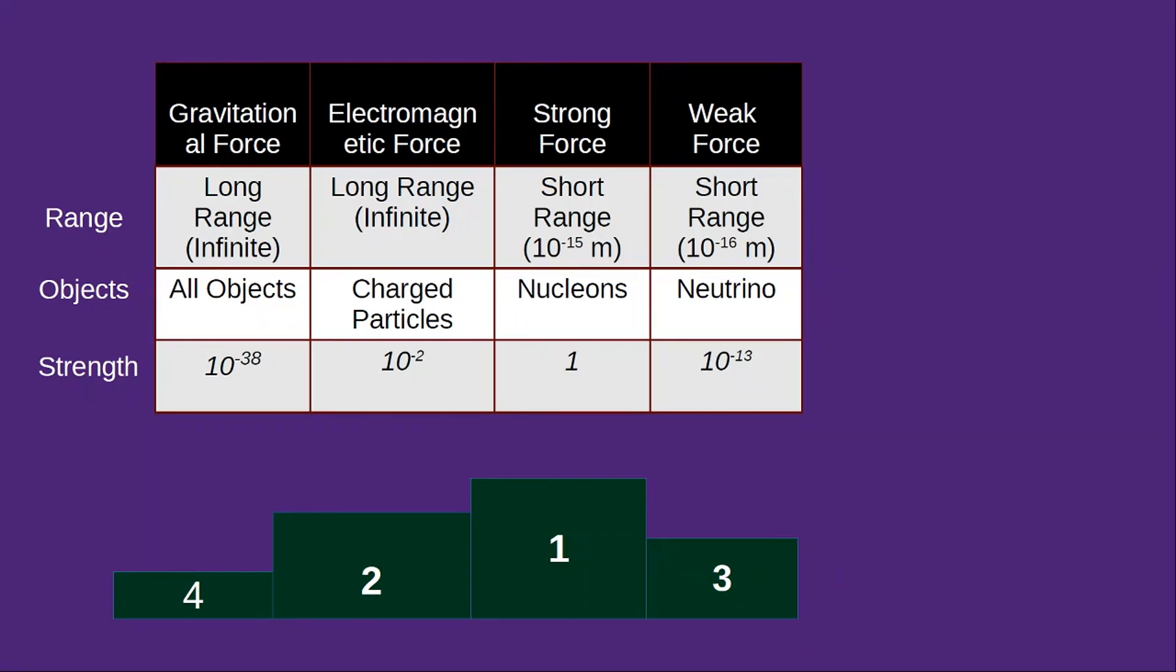If we compare the strength of these four forces, then we will find that the gravitational force is the weakest among them. The weak force is in the third place. The electromagnetic force is in the second place. And the strongest among them is the strong nuclear force.